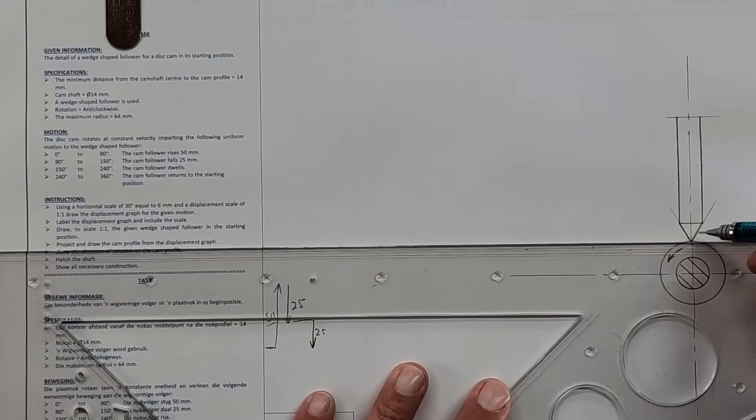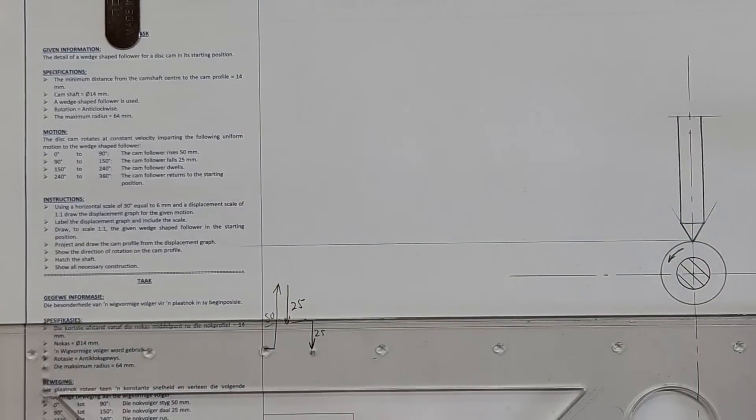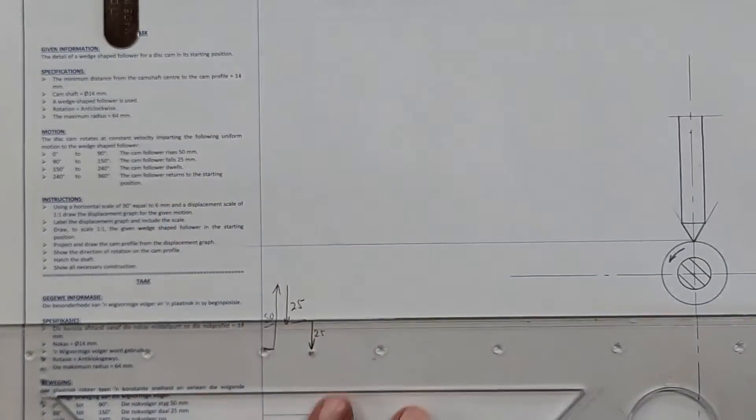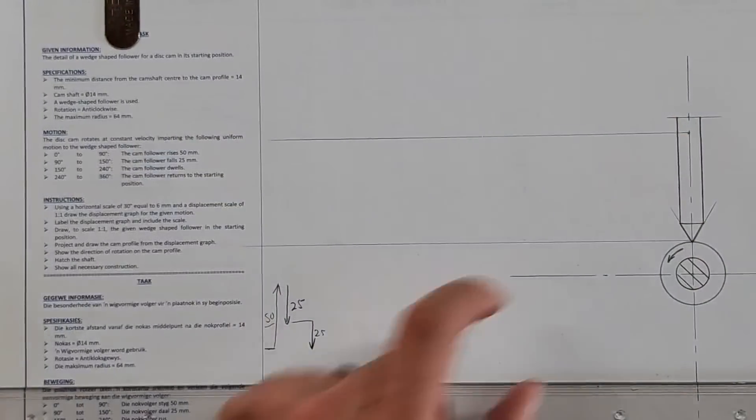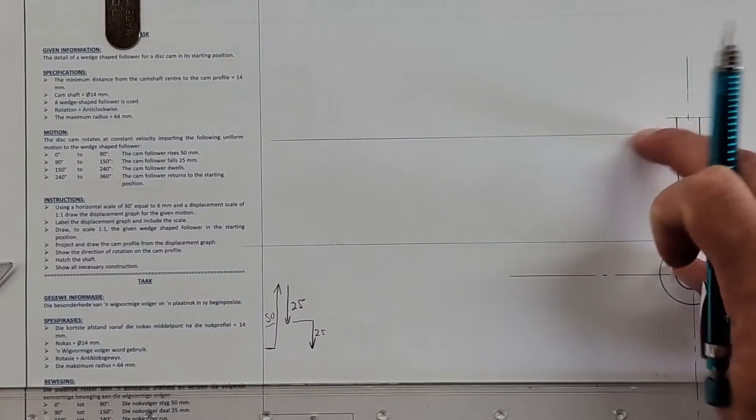If I now use the base of that follower, draw a line to the left and I add my 50, that's where I come to that 64 which was the maximum radius. Are you all with me at this stage?